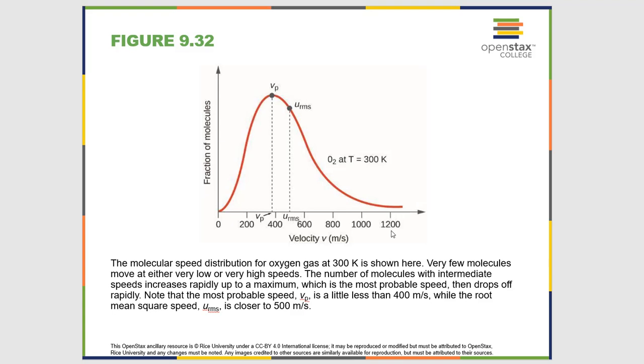Some are moving at 1200 meters per second, some are moving barely above zero meters per second, and this is in the same sample at 300K. The highest probability is just under 400 meters per second. So the atom with the speed of highest probability is just under 400 meters per second. But there is a large range of speeds.